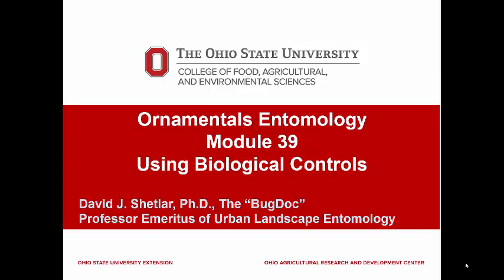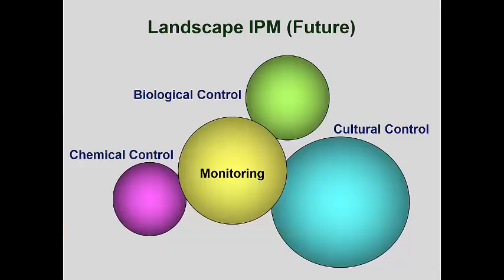In other cases, because of the rather unnatural nature of urban landscapes, these beneficials may need some help. My personal experience suggests that biological control of most landscape insect and mite pests will never become the dominant method that we actively use to manage pests. With that said, biological controls are already the most common way that landscape pests are controlled. We generally just don't manage these natural controls.